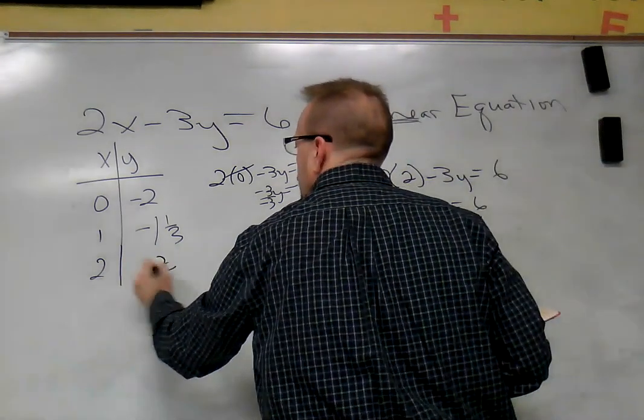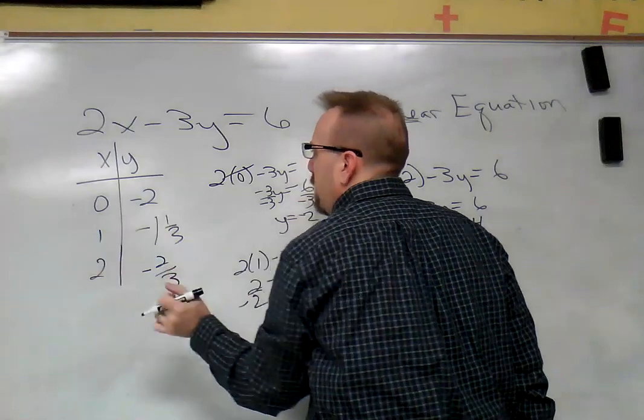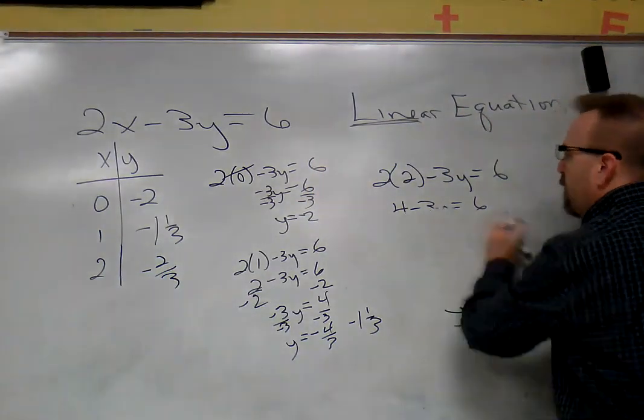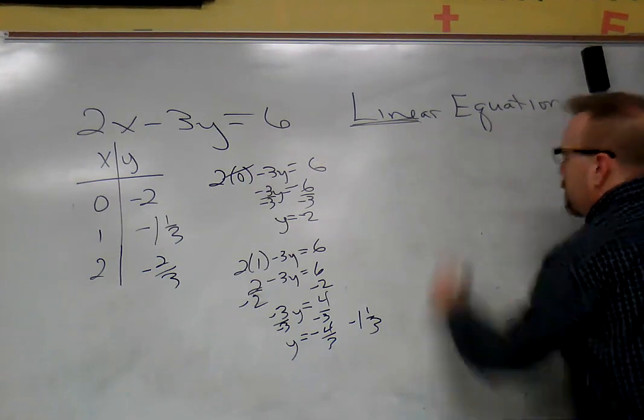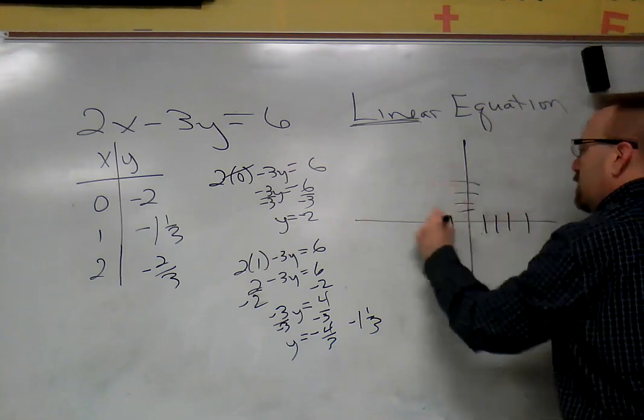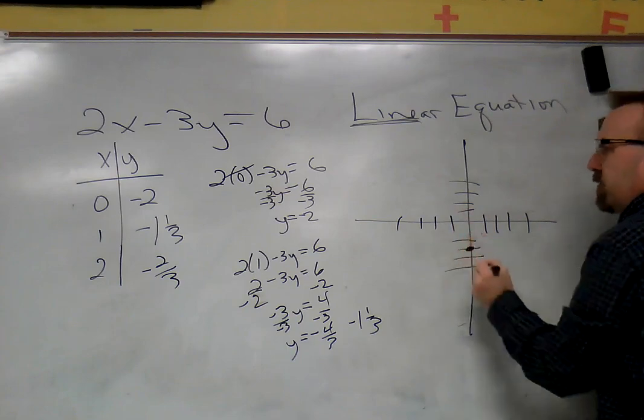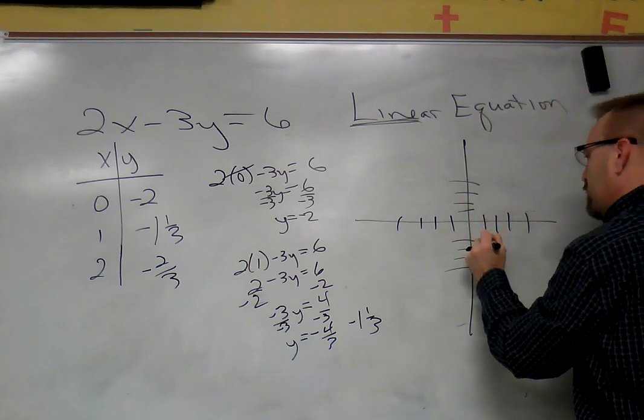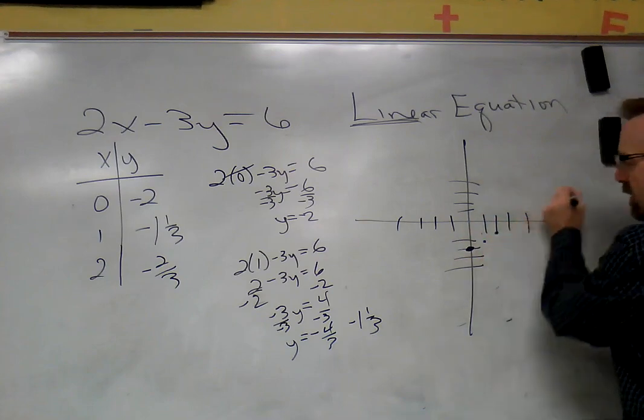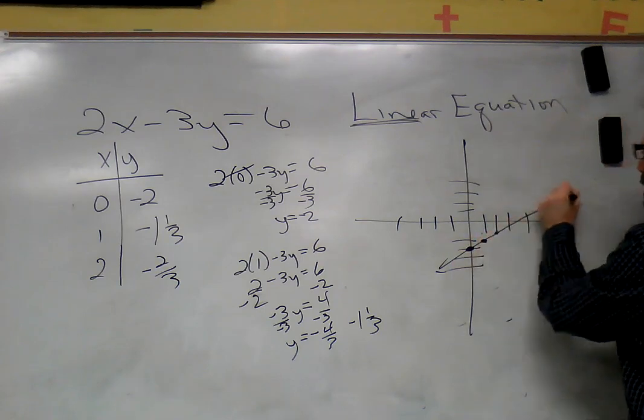So we have three pairs, three points: (0, -2), (1, -1 and 1/3), and (2, -2/3). If we were to come over and plot those points, we have over zero, down two, that's (0, -2). Over one, down one and one third, and over two, negative two thirds. So we've got our three points. Graph paper's going to make that easier to do, I'll give you graph paper.